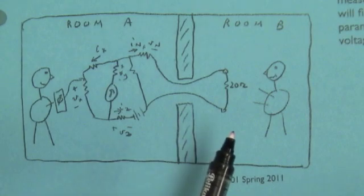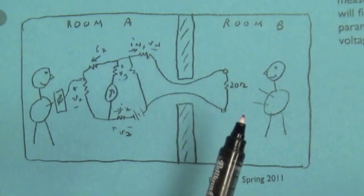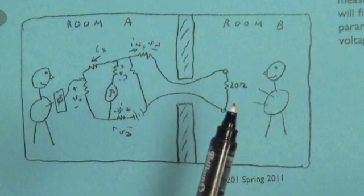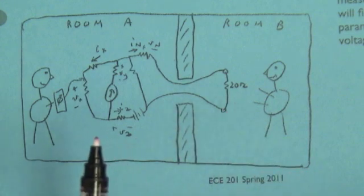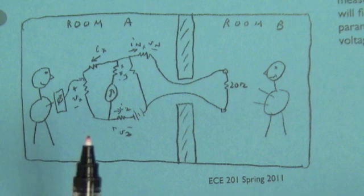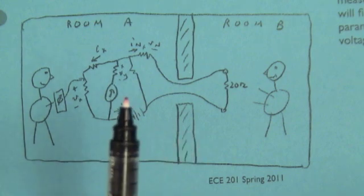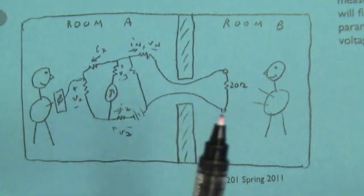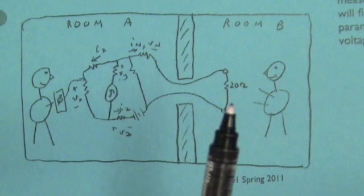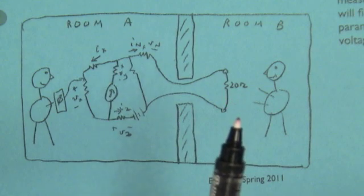Suppose she changes her circuit by replacing those two 10 ohm resistors with one 20 ohm resistor. As far as Celine is concerned in room A, everything is exactly the same. From her perspective with the rest of the circuit, 20 ohms is the same as two 10 ohm resistors in series.